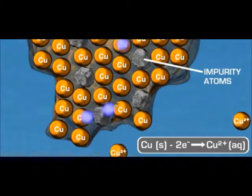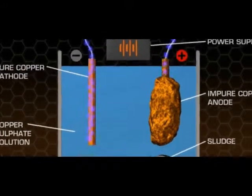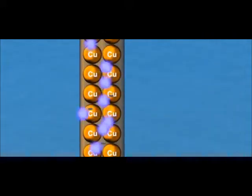The cathode. The positive copper ions released at the anode are attracted to the negative cathode. Here each copper ion picks up two electrons from the cathode to form a neutral copper atom.